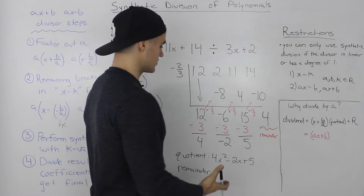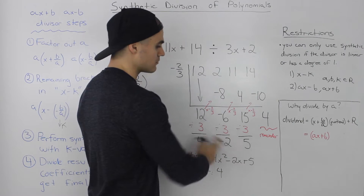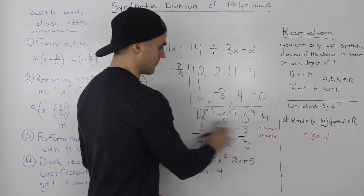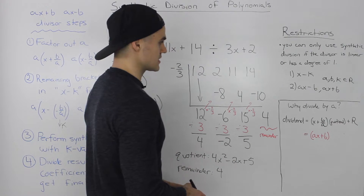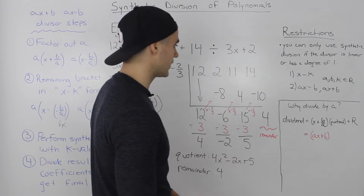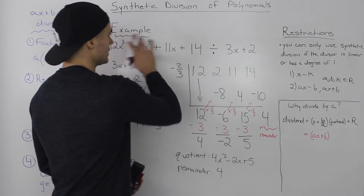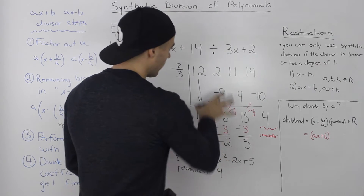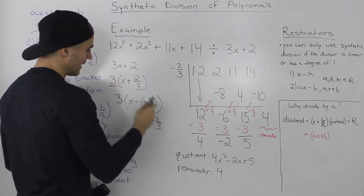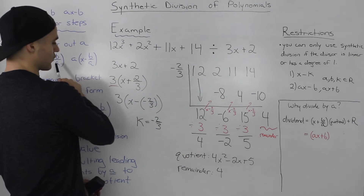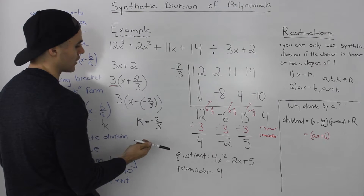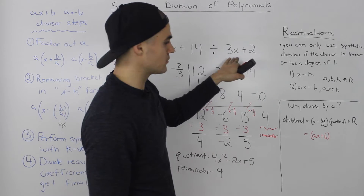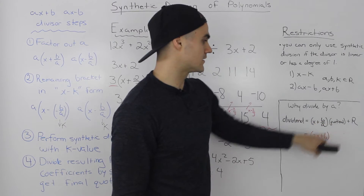Some of you may be asking why we take the leading coefficients and divide by the a value. You really don't have to know why — I'd just recommend you remember to do so. But if you're interested in the intuition, I've made a separate section to explain it. Looking at the initial question, our divisor was in the form ax + b. However, when we did synthetic division, our divisor was in the form x + b/a, or equivalently x − (−b/a).